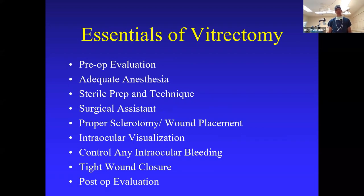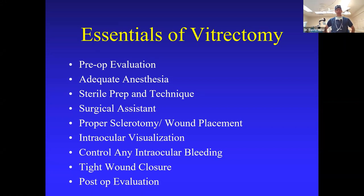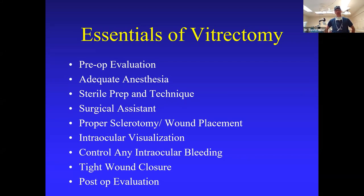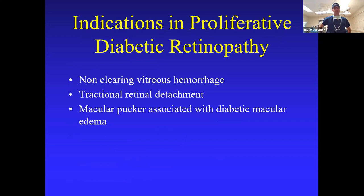The essentials of any vitrectomy surgery for proliferative diabetic retinopathy include a good pre-op evaluation in the clinic, adequate anesthesia evaluation before surgery, a sterile prep and technique to lower infection risk, a good surgical assistant, proper sclerotomy and wound placement, intraocular visualization, control of intraocular bleeding, tight wound closure, and post-op evaluation. The indications in PDR include non-clearing vitreous hemorrhage, tractional retinal detachment, and macular pucker associated with diabetic macular edema.